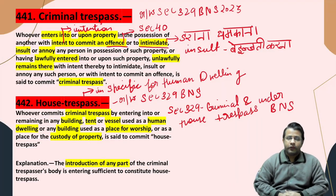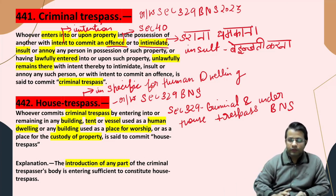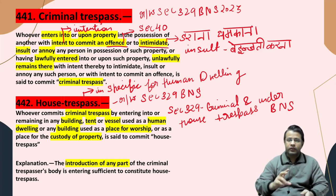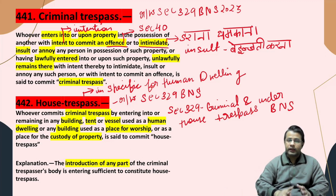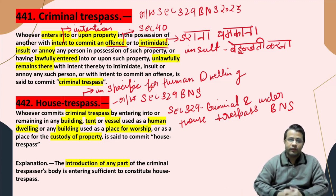Section 441, i.e. Criminal Trespass. This is a cluster of sections, a series of sections — we will cover all the related trespasses. So we will start by reading the direct provision. Let's start.